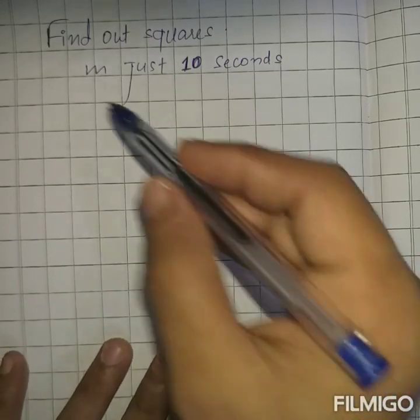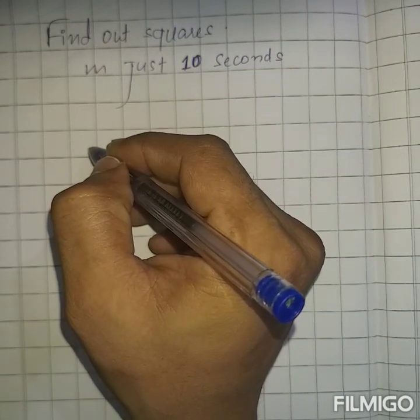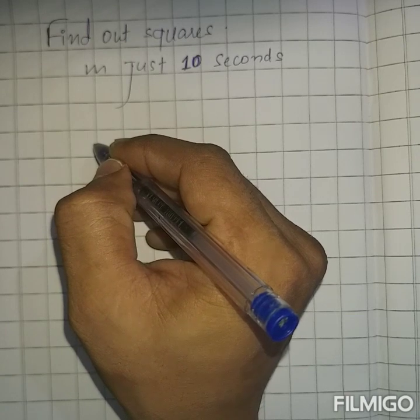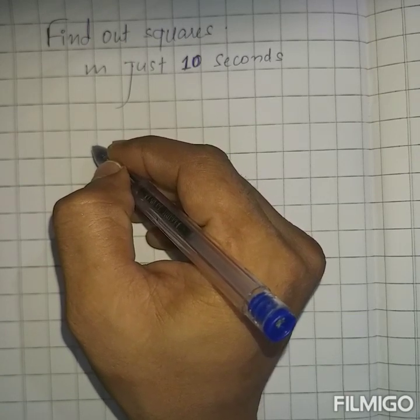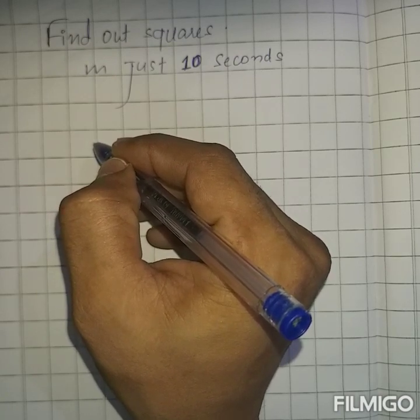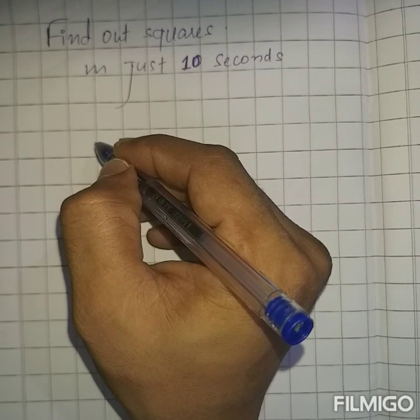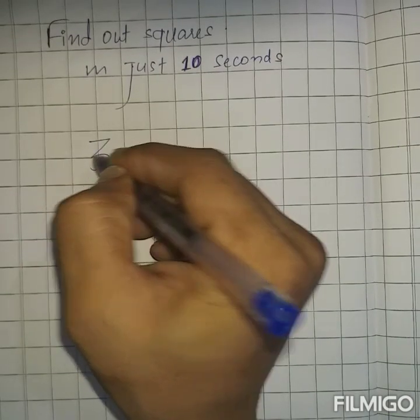So first of all, let us start with an example. Let's take a number and find out its square. I'll follow the steps which I will tell you. You also follow the same and later on you can verify yourself whether you are able to do it within 10 seconds or not. So let us start.